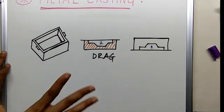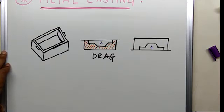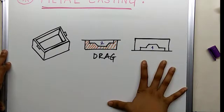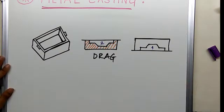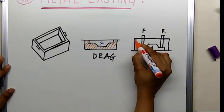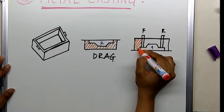Now first the drag box is filled and it is kept aside. Next, while filling the COPE box, before we put the sand around the pattern, feeder and riser is inserted. And then sand is inserted around.